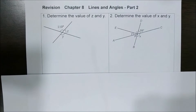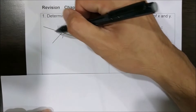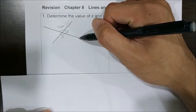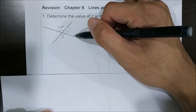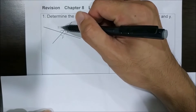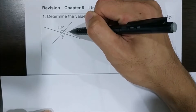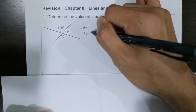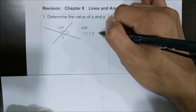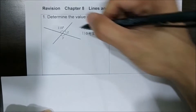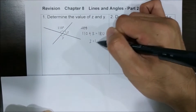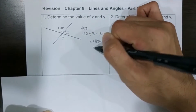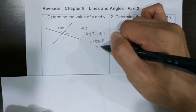Number 1: determine the value of Z and Y. Given the straight line here, the angle on a straight line is 180. So 110 plus Z equals 180 because these are the angles on the straight line. So Z equals 180 minus 110, which is 70 degrees.